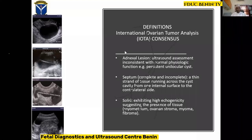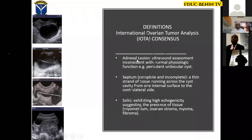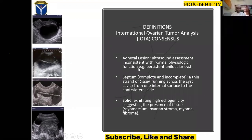I chose the IOTA consensus because it is widely accepted and validated. An adnexal lesion, as defined by IOTA, is any ultrasound assessment inconsistent with normal physiological function — for example, a persistent unilocular cyst. A persistent cyst is inconsistent with normal physiology. What is consistent with normal physiology is for follicles to be recruited, a dominant follicle to be selected, mature, rupture, and transform into a corpus luteum, which then regresses and becomes corpus albicans. A persistent follicular cyst is therefore an adnexal lesion.